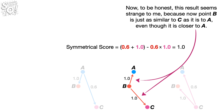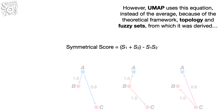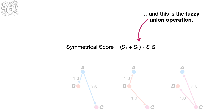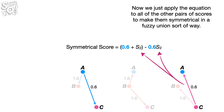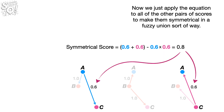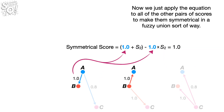To be honest, this result seems strange, because now point B is just as similar to C as it is to A, even though it is closer to A. However, UMAP uses this equation instead of the average because of the theoretical framework — topology and fuzzy sets — from which it is derived. And this is the fuzzy union operation. Now we just apply the equation to all of the other pairs of scores to make them symmetrical in a fuzzy union sort of way.